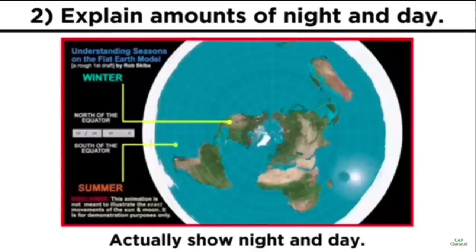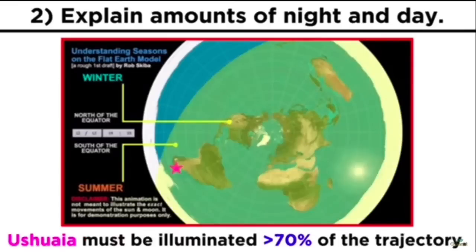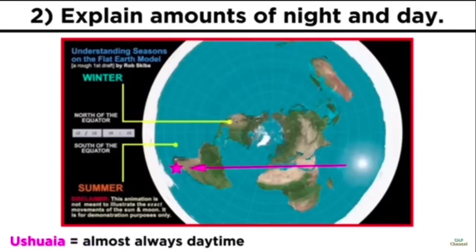Now take your little model for the seasons and make it show night and day. Then try and make the night and day portions match up with these sunrise and sunset times. Demonstrate the light from the sun illuminating this location for more than 70% of its trajectory. And as you do that, make sure that it does not illuminate Point Barrow, Alaska whatsoever during its entire trajectory, as that town has endless night during this time of the year. That's right, lots of sun over here, and zero sun over here. Good luck.